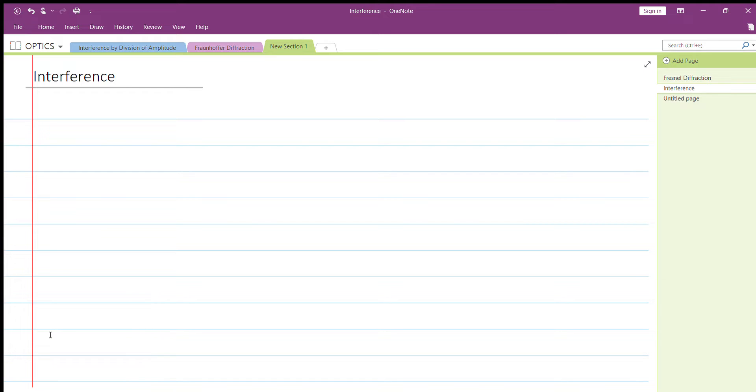So first we will see interference. Interference is two chapters: Interference by Division of Wavefront and Interference by Division of Amplitude. First we will discuss Interference by Division of Wavefront. The first important question is Superposition Principle.